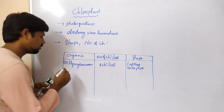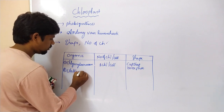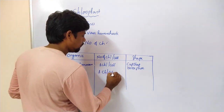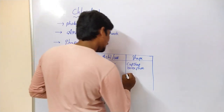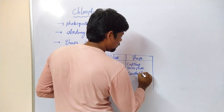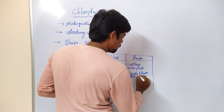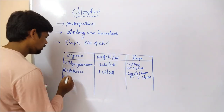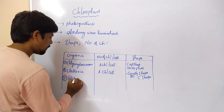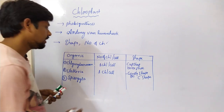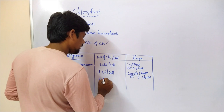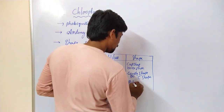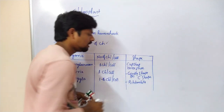The second organism is Ulothrix. Ulothrix also contains one chloroplast per cell, and it has a girdle structure - girdle shape or C-shape. The third one is Spirogyra. Spirogyra contains 1 to 16 chloroplasts per cell, and it has a ribbon-like shape.